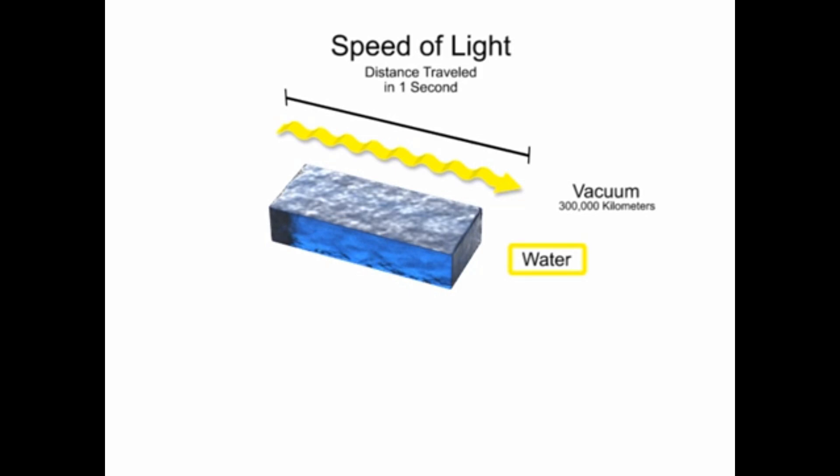In water, light travels at about 75% of its speed in a vacuum, or 225,000 kilometers per second.